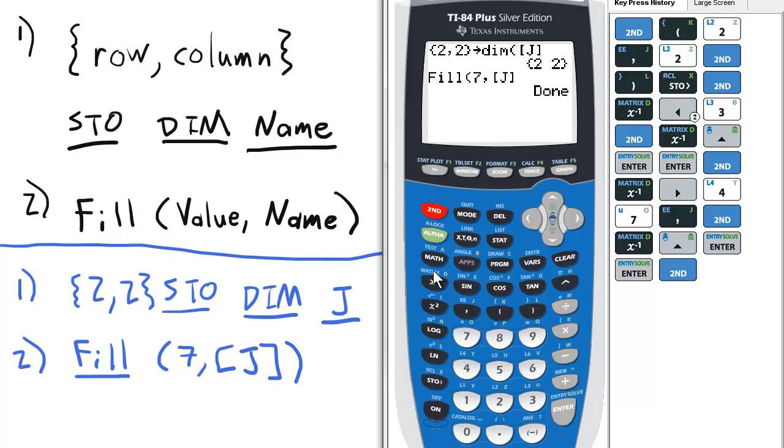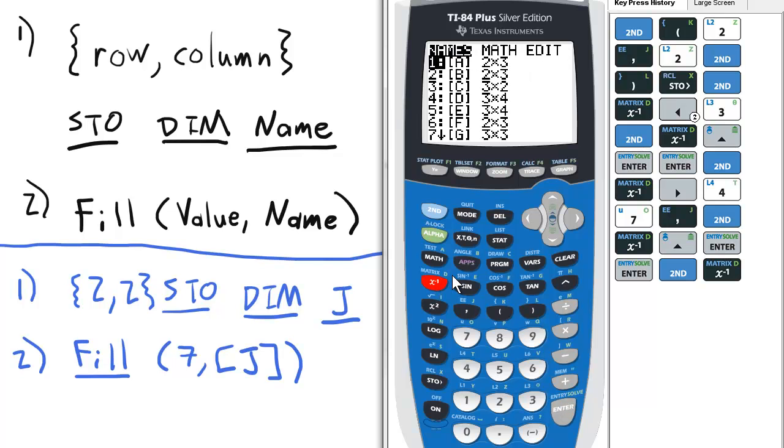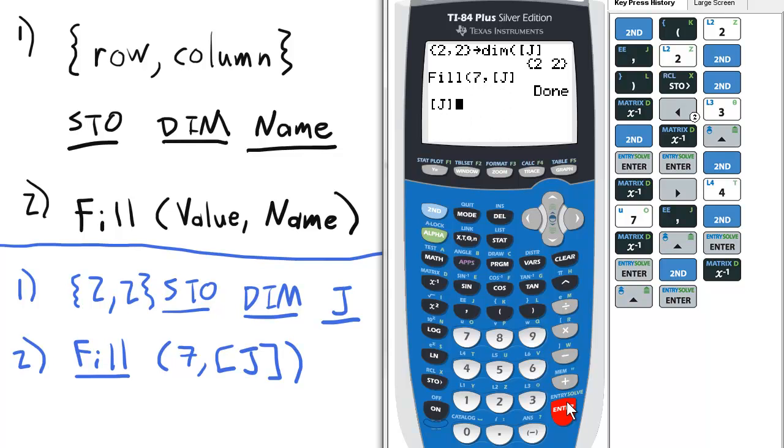Now, to see the work we've done, we can select matrix J. I could have done this shorthand by just going to zero, but for those people unfamiliar, we do this. And notice it's a two by two, all the elements are seven.